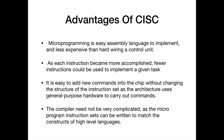Advantages of CISC: Microprogramming is easy to implement in assembly language and is less expensive than hardwiring a control unit. As each instruction became more accomplished, fewer instructions could be used to implement a given task. It is easy to add new commands into the chip without changing the structure of the instruction set, as the architecture uses general purpose hardware to carry out commands. The compiler need not be very complicated, as the microprogram instruction set can be written to match the constructs of high-level languages.